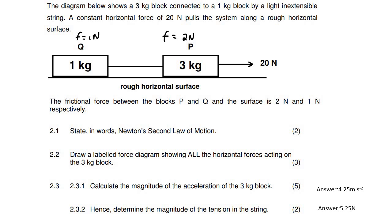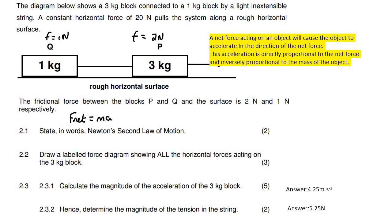The first question: state Newton's second law. Newton's second law is the one that talks about F_net equals ma — it has something to do with net force, mass, and acceleration. Your teacher might use a slightly different definition, but the one I see most often is: the net force acting on an object will cause the object to accelerate in the direction of the net force. This acceleration is directly proportional to the net force and inversely proportional to the mass of the object.